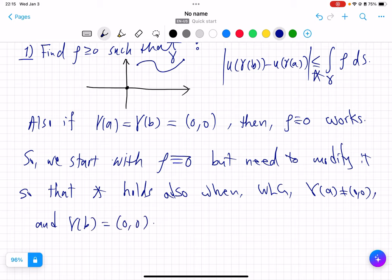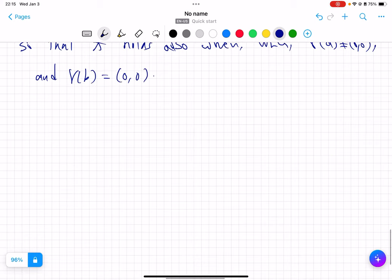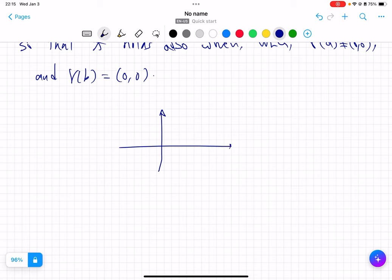So that this inequality * holds also when, without loss of generality, γ(a) is other than (0,0), we start away from (0,0), and we end there γ(b) equals (0,0). So we want to start with a ρ defined on R^2, a Borel function, so that no matter what curve I take that starts away from zero and ends there, the integral of ρ along that curve becomes at least one, because remember this is just u(γ(b)) minus u(γ(a)).